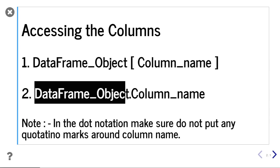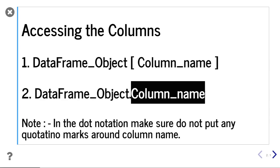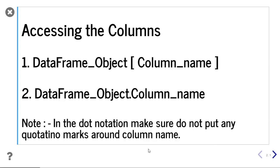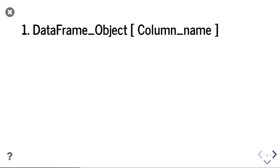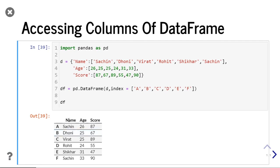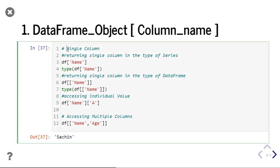In the second way, you must remember that the column name should not be enclosed in any quotations. There is one note: in dot notation, you should make sure that you do not put any quotation marks around the column name. We will see these two types one by one. The first type is where we will give our data frame object and our column name. In my case, my data frame object is df, so I will give df and then my column name.